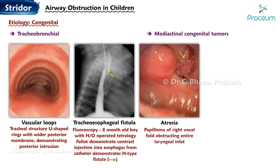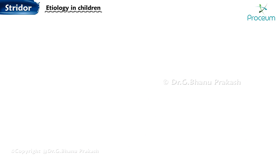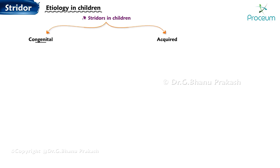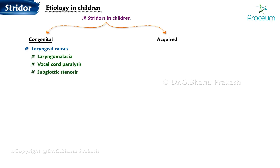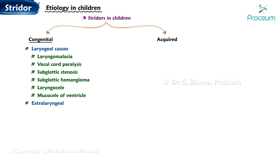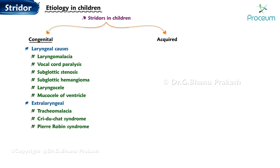Laryngeal congenital causes include: supraglottic — laryngomalacia, cyst, tumors; glottic — webs, palsy, cyst; subglottic — stenosis, tumors. Tracheobronchial causes include vascular loops, tracheoesophageal fistula, mediastinal congenital tumors, atresia, and stenosis. Among laryngeal congenital factors are laryngomalacia, vocal cord paralysis, subglottic stenosis, subglottic hemangioma, laryngocele, and mucocele of the ventricle. Extralaryngeal congenital causes encompass tracheomalacia, cri-du-chat syndrome, Pierre Robin syndrome, lingual thyroid, and vascular rings over the trachea.